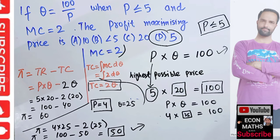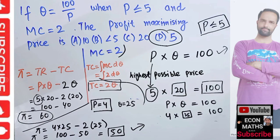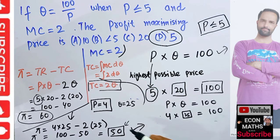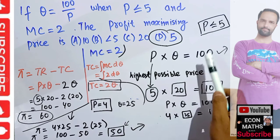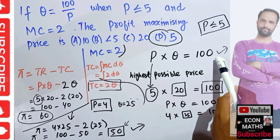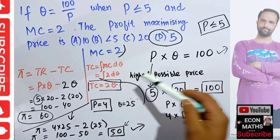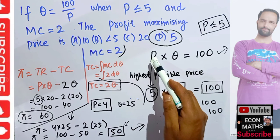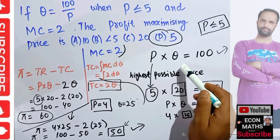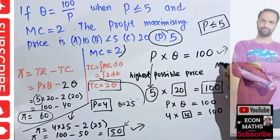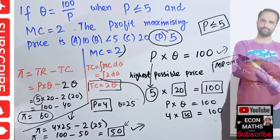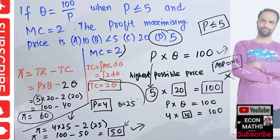Any price less than $5 gives less profit. When price was $5, profit was 60; when price was $4, profit declined to 50. The logic is simple: when total revenue is constant, the firm should charge the highest possible price and produce the lowest possible output. We cannot use the MR equals MC condition here — it will fail. You have to think outside the box.